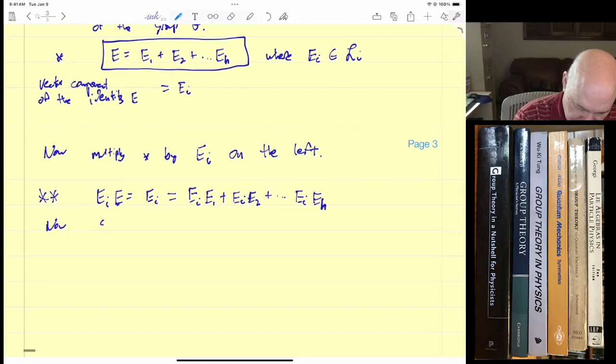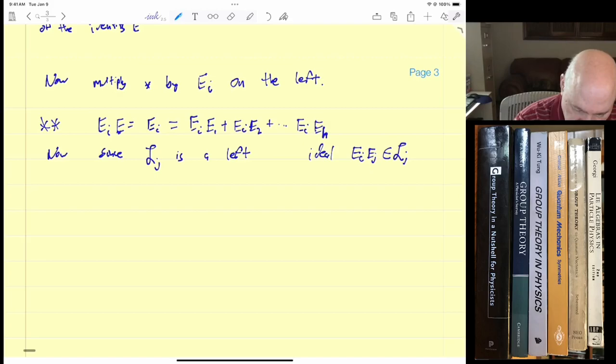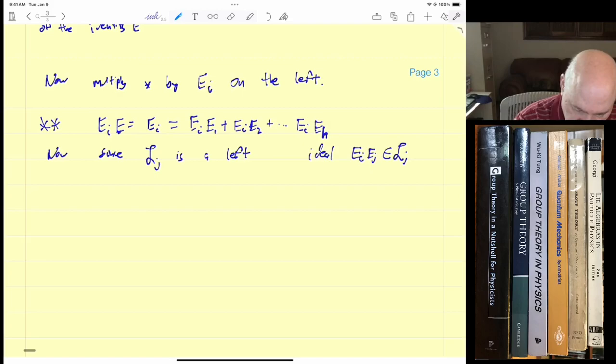Now since LJ is a left ideal, EI EJ is in LJ. Now let's just do a quick example to see what this implies. Let's say we focus on a particular EI, let's say E2. E2 is equal to E2 E1 plus E2 E2 plus E2 E3 plus E2 EH.